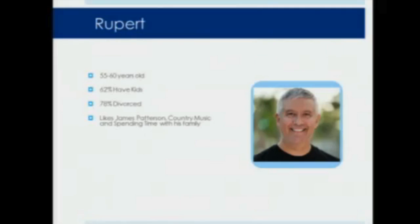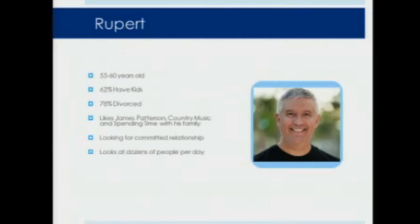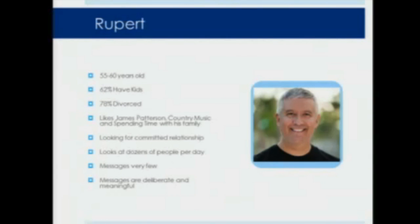Rupert is a slightly older dude, 55 to 60 years old. There's a 62% chance he has kids, 78% chance he's divorced. Some of his favorite things are James Patterson, country music, and spending time with his family. He's looking for a committed relationship. He will look at dozens if not hundreds of people per day, but only message a couple. His messages tend to be a lot longer than other users, because he assumes it's more of a correspondence rather than just an online message.